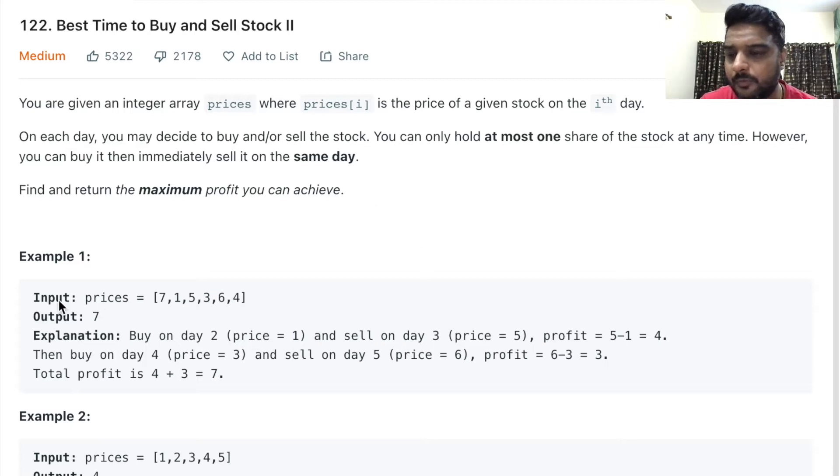Find and return the maximum profit you can achieve. We have an example with prices [7,1,5,3,6,4] and the output is 7. We can buy on day 2 at price 1 and sell on day 3 at price 5, giving us profit of 4. Then buy on day 4 at price 3 and sell on day 5 at price 6, giving us 3. So 4 plus 3 equals 7, the maximum profit.